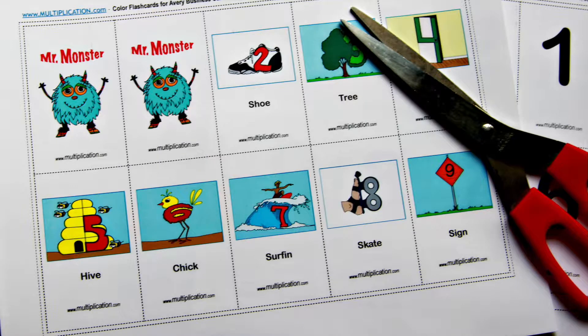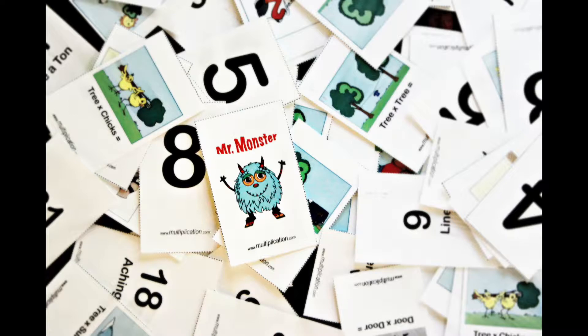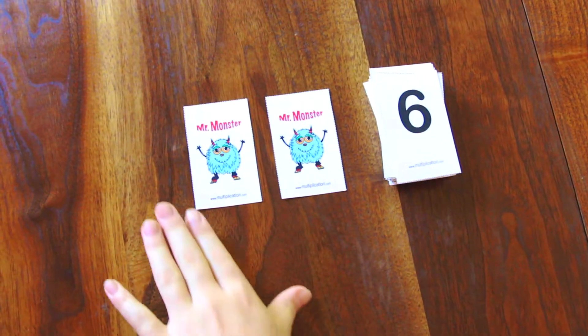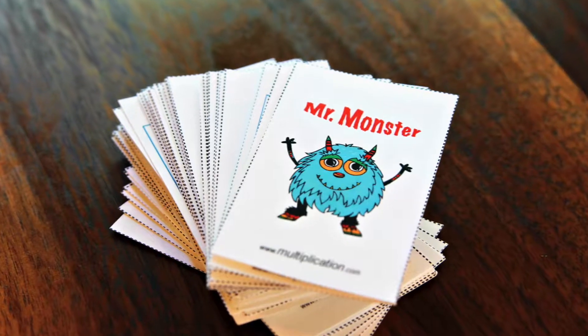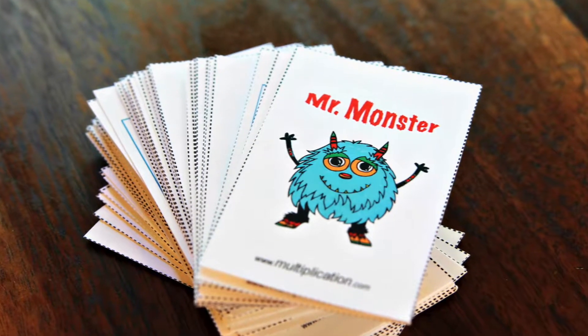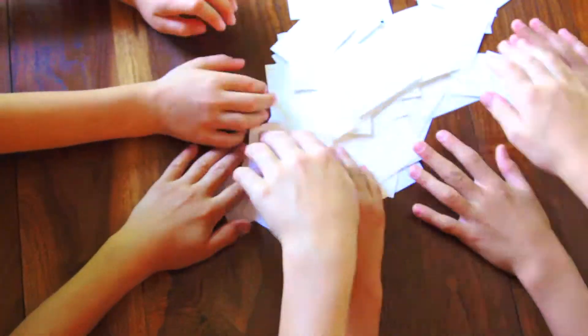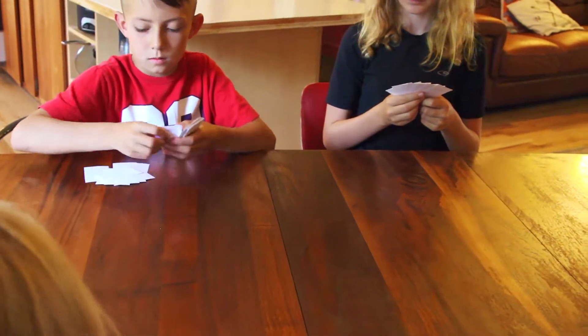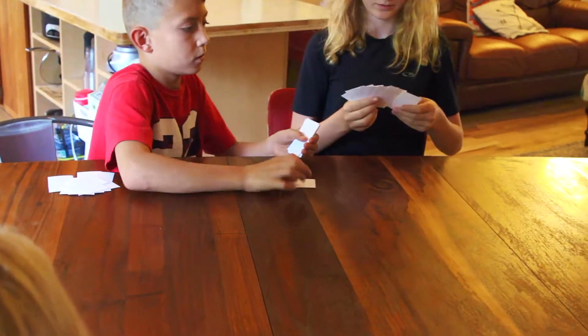Head on over to Multiplication.com to print off your free deck of playing cards. Since you will only be playing with one Mr. Monster card, remove the extra Mr. Monster card and save it for a different card game. Shuffle cards and deal the cards one at a time to each player until all the cards are dealt and no cards remain in the pile.